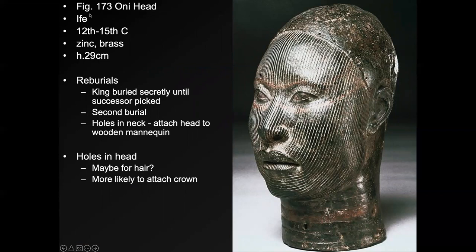This is an Oni head from the Ife people, who are an ancient people. In modern times, the Yoruba in West Africa — who live mostly in Nigeria — see the Ife as their ancestors. We can see this is probably what Ben Jones was working with when he made his faces in the previous slide. For the Ife, this is a very idealized and beautiful face — you can see the perfect symmetry, and incredible shape of the eyes, nose, and mouth.